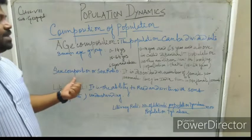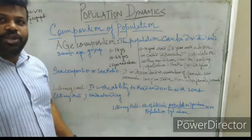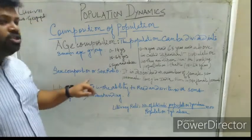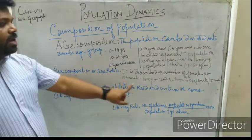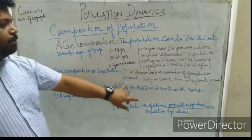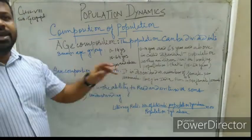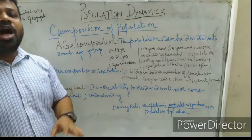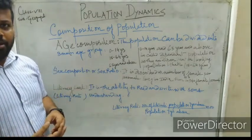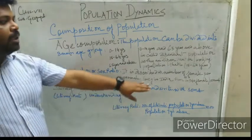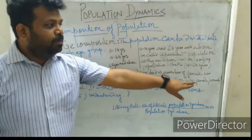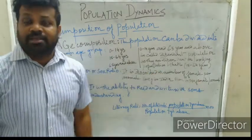Next comes sex composition, or sex ratio. Sex ratio is the number of females per 1,000 males in a country. For example, in India, the sex ratio is 940 females per 1,000 males.